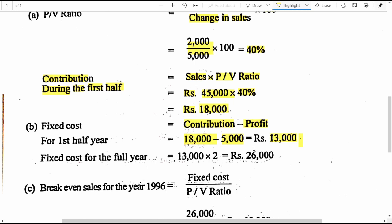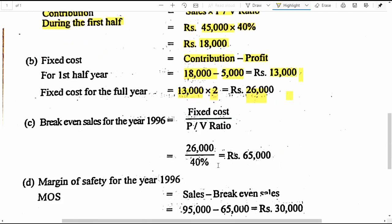Since the fixed expenses are incurred evenly or equally throughout the year, the fixed expenses for the first half year can be multiplied by two, giving us a total fixed cost of 26,000 rupees for the whole year. The next calculation is break-even sales for the year. Fixed cost divided by PVR: 26,000 divided by 40% gives us 65,000 rupees as the break-even point sales for the given year.